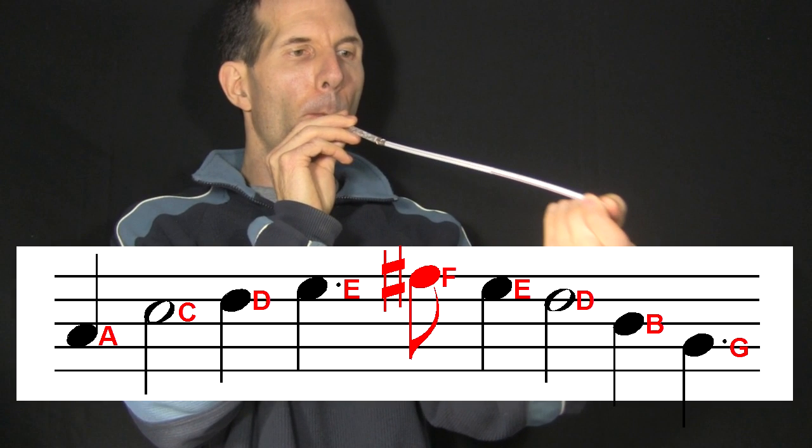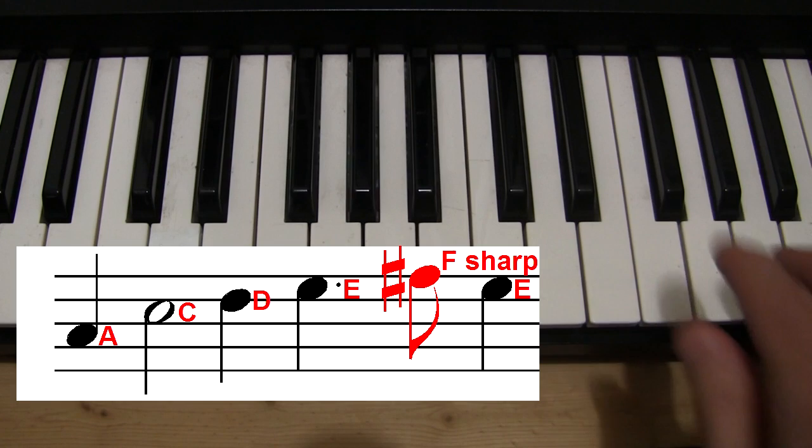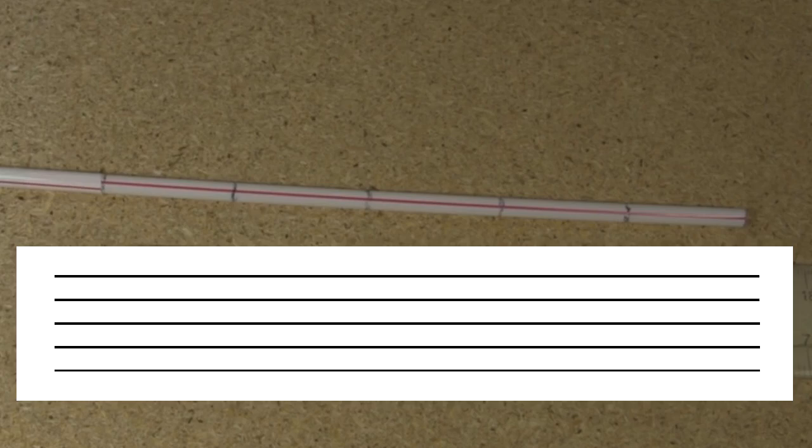Notice this F with the number sign beside it. From our crude instrument we can ignore what that number sign means, but if you want to explore further, that note is actually F sharp and not F. It's this one on the piano. So I cheated.